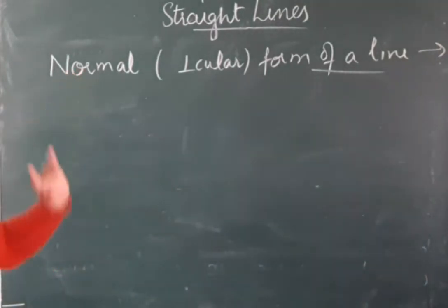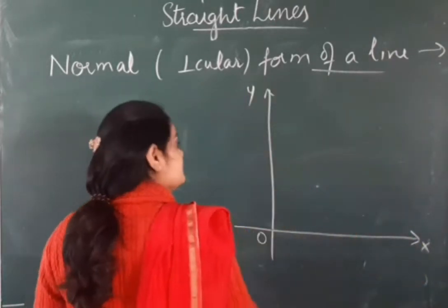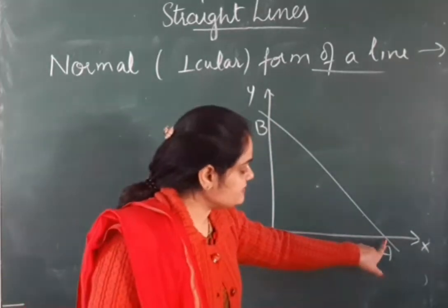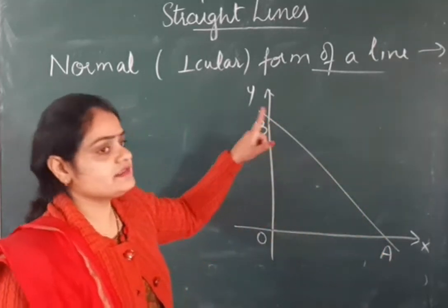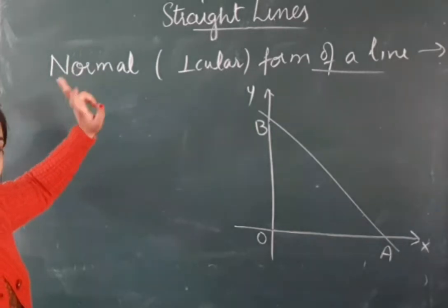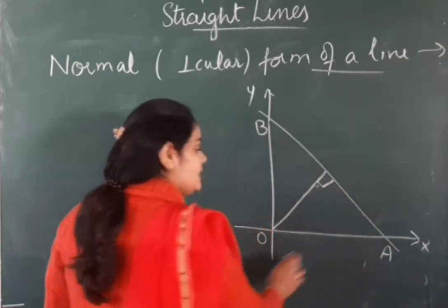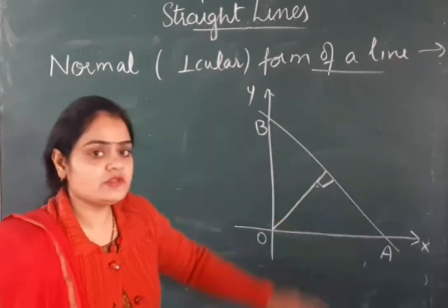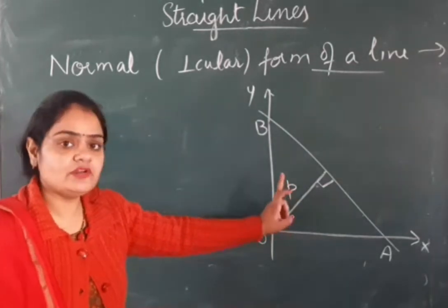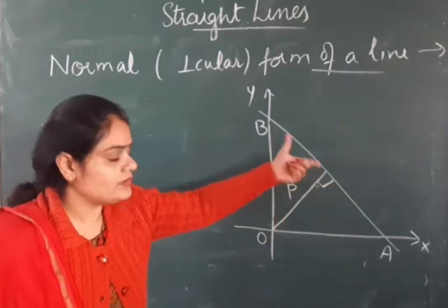What is the normal form of a line? If we have coordinate axes, x-axis and y-axis, and a line which intersects the x-axis at 'a' and the y-axis at 'b', then the normal is the perpendicular drawn from the origin to the line. This perpendicular distance is taken as small p.